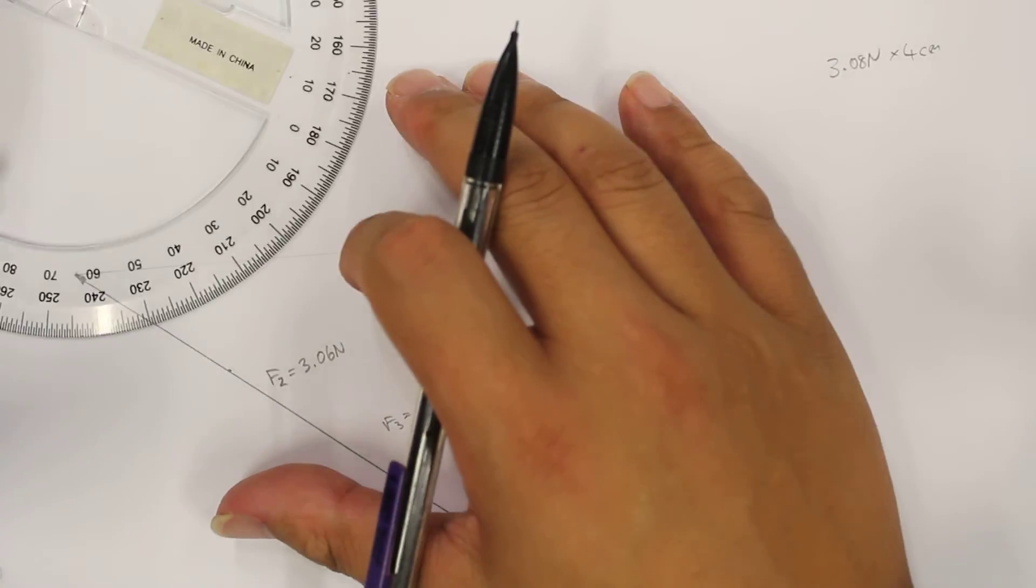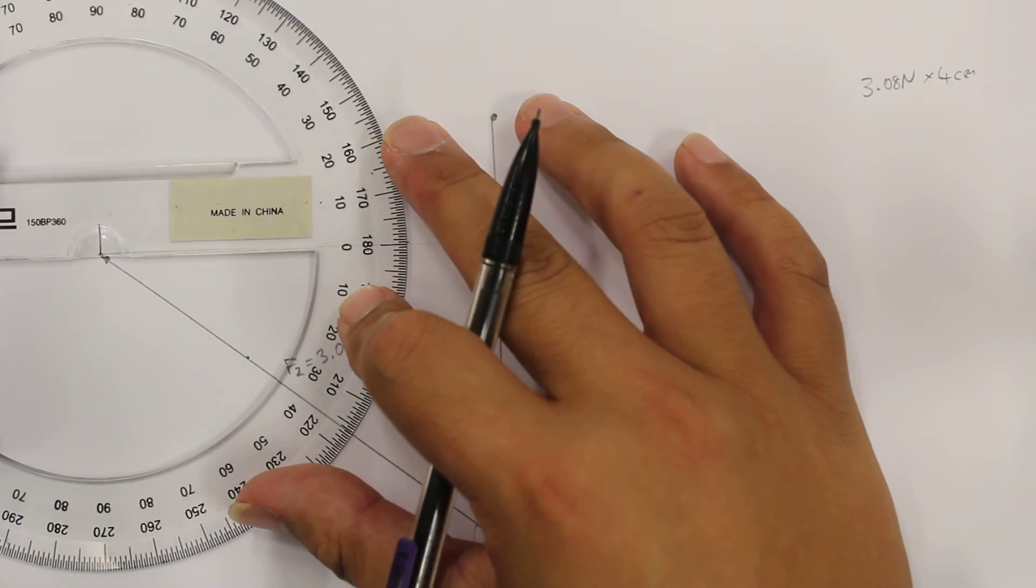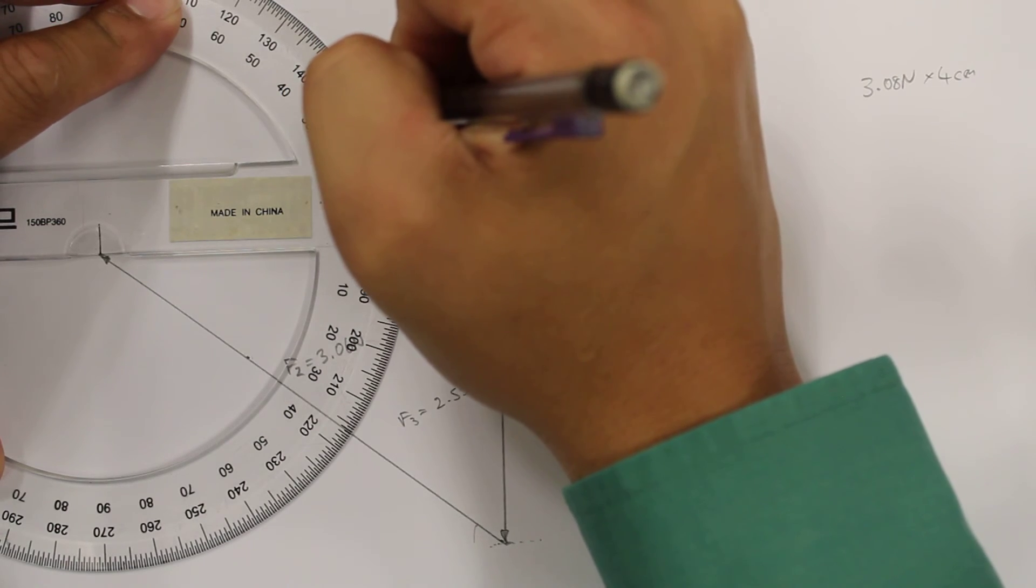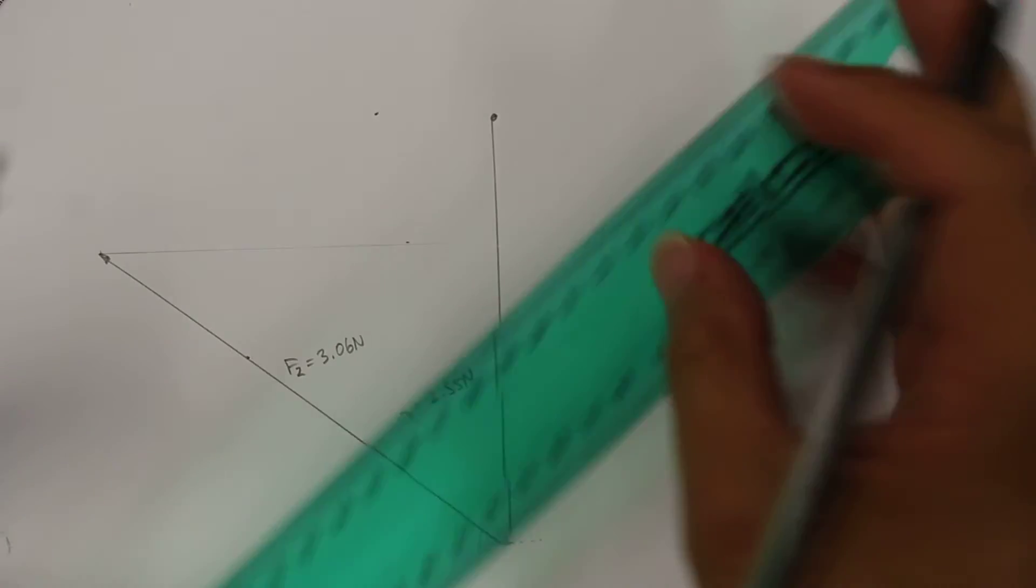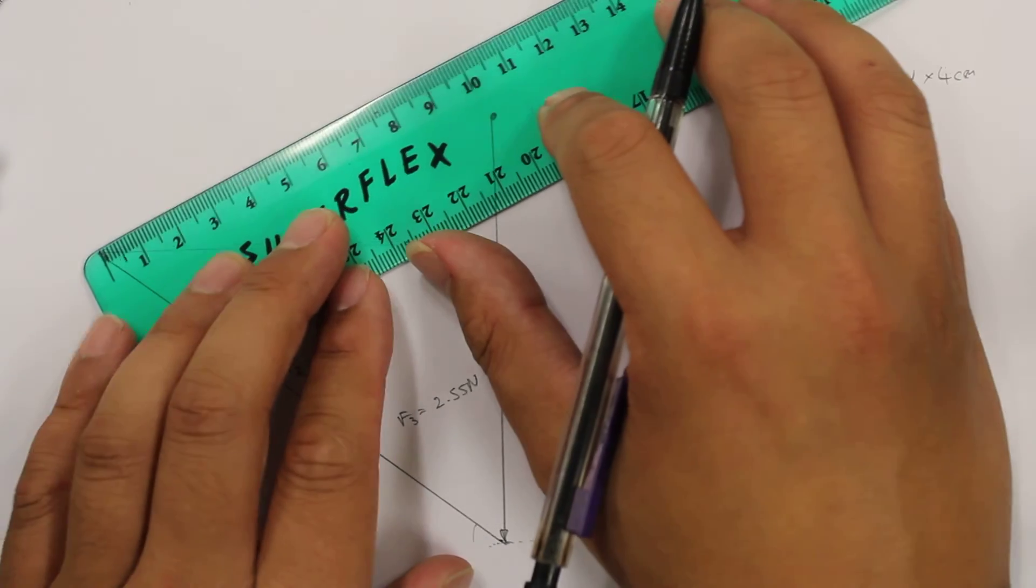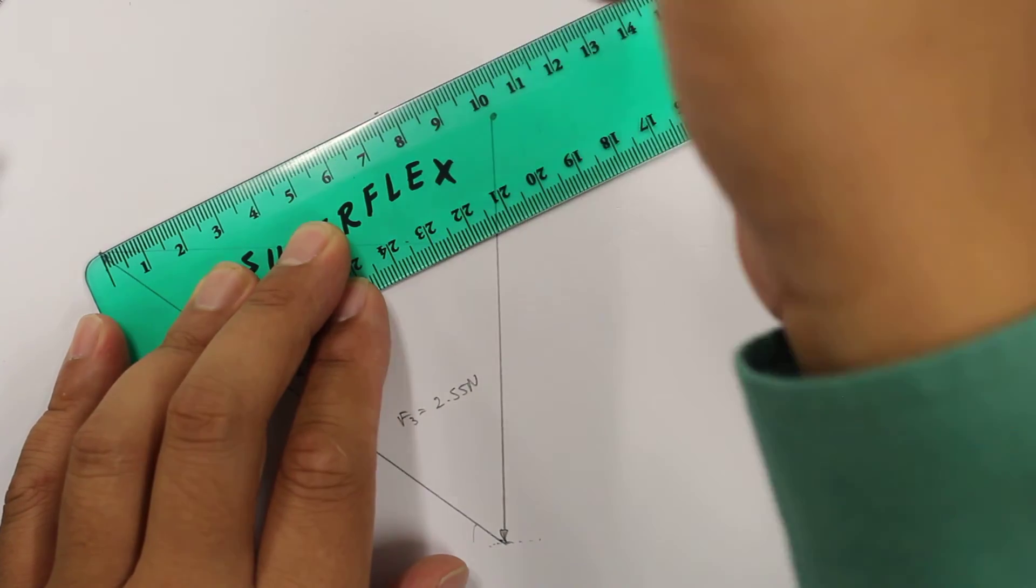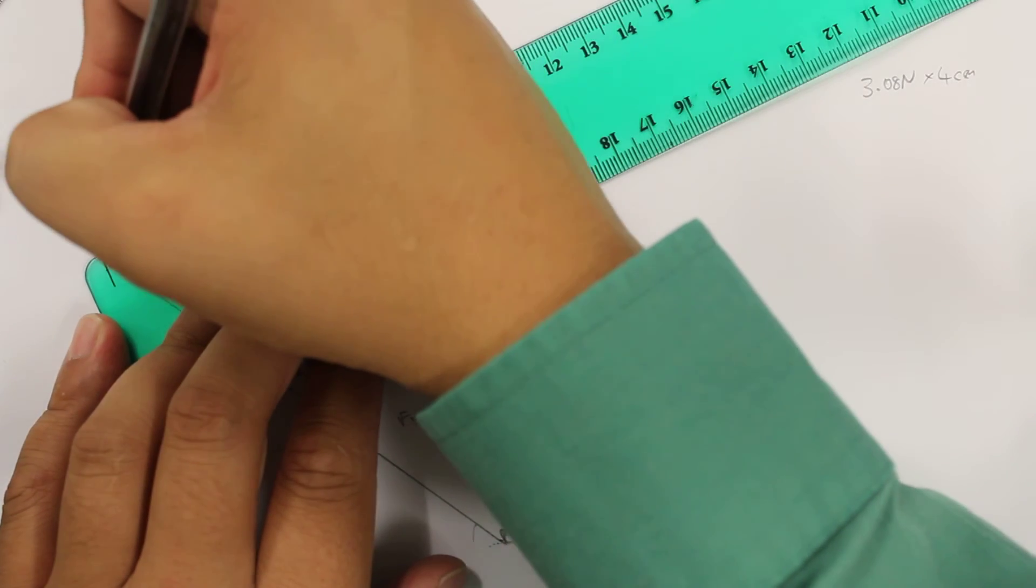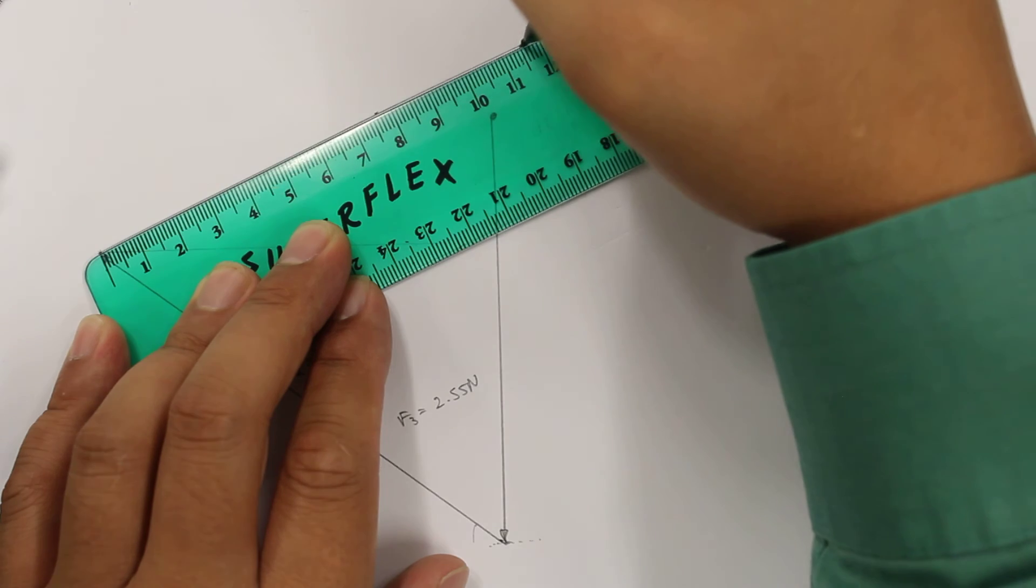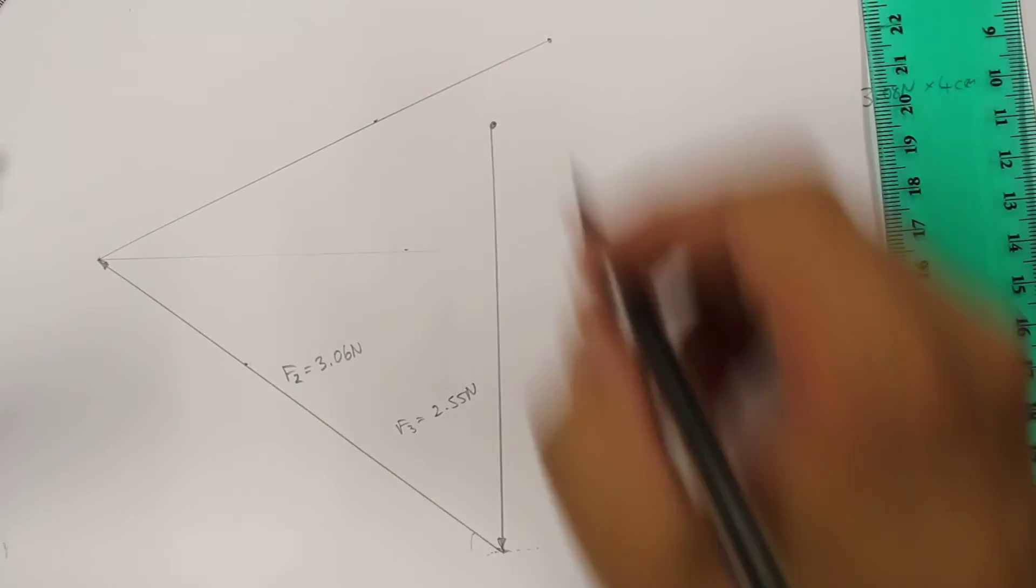Okay, so over here I'll measure 25 degrees, and we'll measure a line which is 12.32 centimeters long. Okay, so 12.32 centimeters long. There we go.